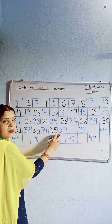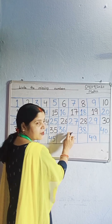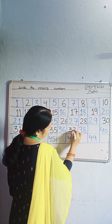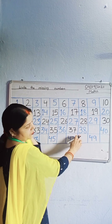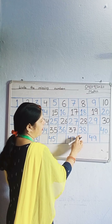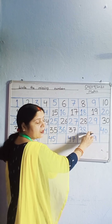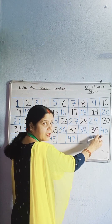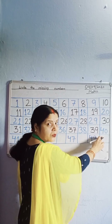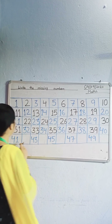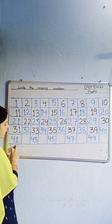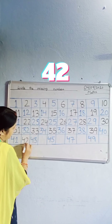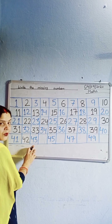Next, which number? 36. Which number is missing? 37. Next, which number? 38. Which number is missing? Next, which number? 40. Next, 41. Which number is missing? 42. Next, 43.